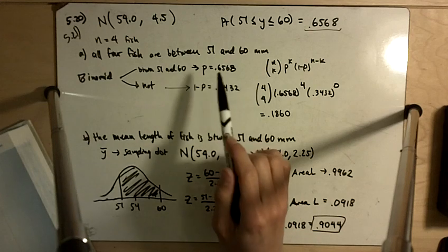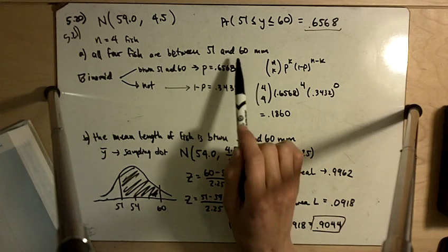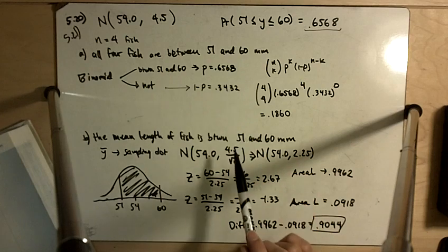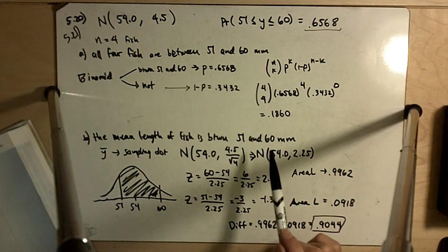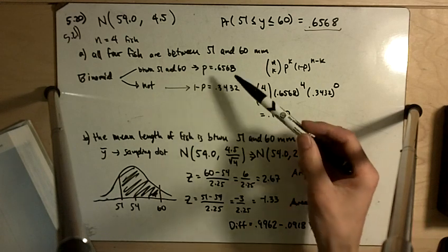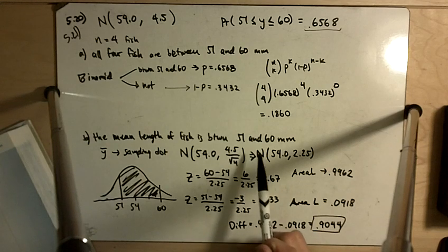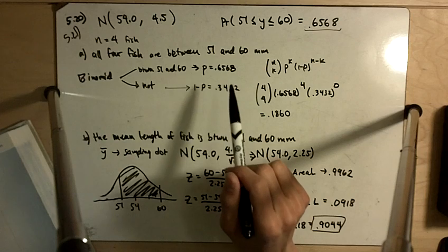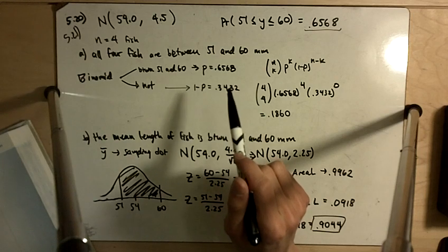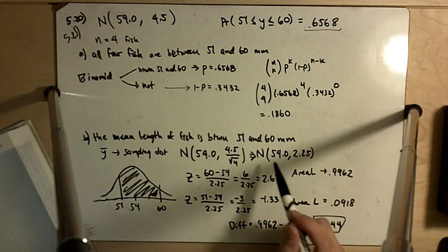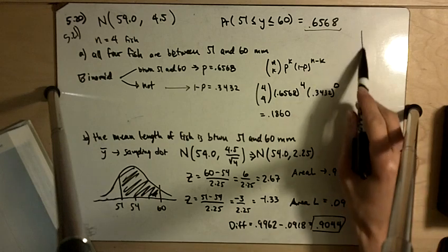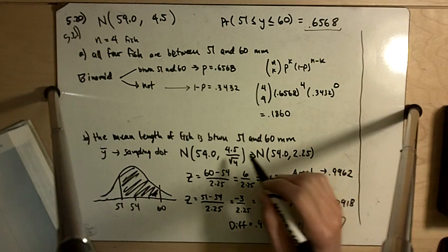So if all four fish are between 51 and 60, part B is always going to happen. But the opposite doesn't have to happen. So we can have the mean length of fish be between 51 and 60, but all four fish will not have to be between 51 and 60. So let me just think of an example.